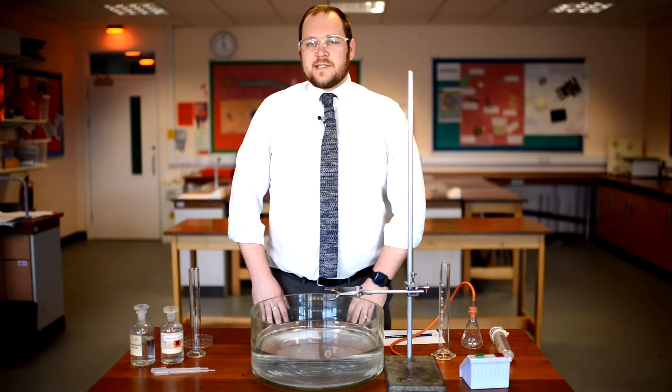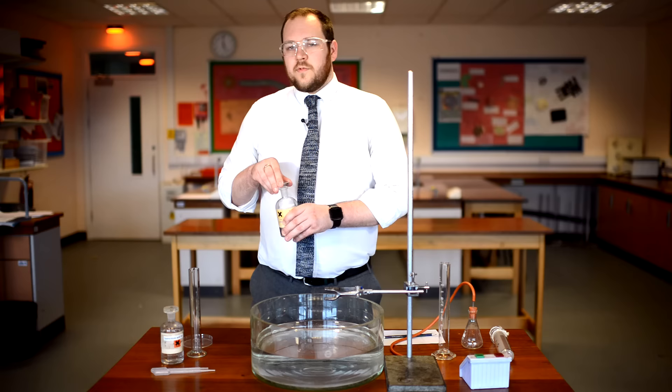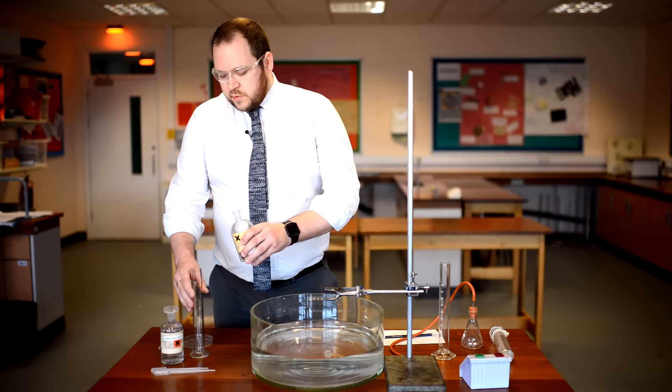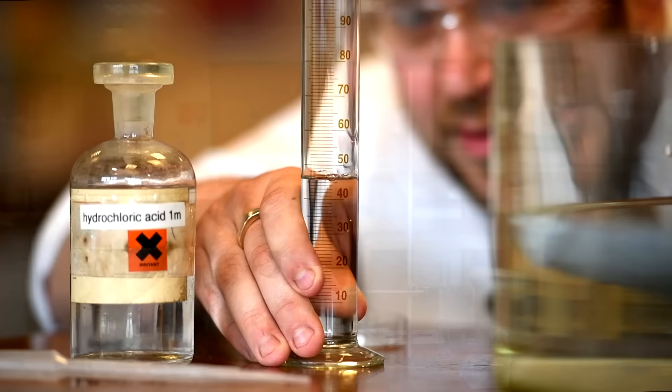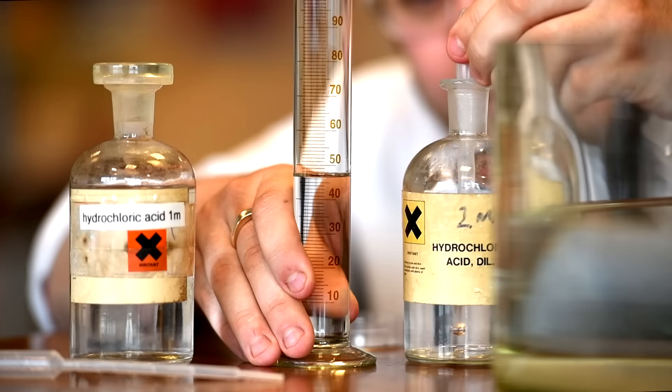I'm going to start by measuring 50 centimetres cubed of two mole per decimetre cubed hydrochloric acid in a measuring cylinder. I'm going to pour the first 45, making sure I read at eye level to see the bottom of the meniscus. As I get close, I'm going to use a pipette to add the final few drops.